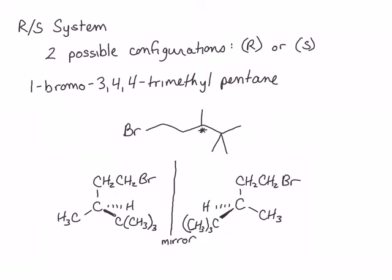First, let's look at the enantiomer on the left. The lowest priority group is almost always the hydrogen. The highest priority group will be the tert-butyl group, because when we look one atom further out, that carbon is bound to three carbons, whereas the methyl carbon is bound to three hydrogens, and the ethyl bromide carbon is bound to two hydrogens and a carbon. The second highest priority will be the ethyl bromide, and the next lowest will be the methyl, which is bound to three hydrogens.